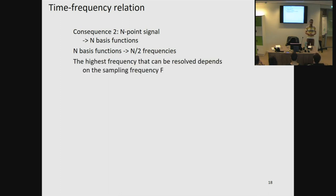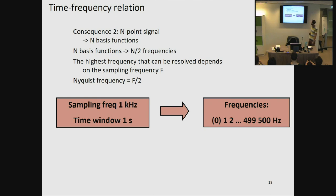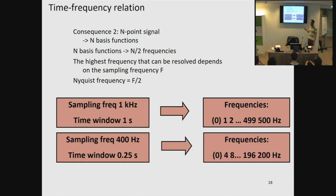This is called the Nyquist frequency, and it is the sampling frequency divided by two. So if our sampling frequency is one kilohertz and we have a time window of one second, we can estimate multiples of one hertz up to a maximum of 500 hertz. Similarly, with a sampling frequency of 400 hertz and a time window of 0.25 seconds, we have a frequency resolution of four hertz, and the highest frequency we can estimate is 200 hertz.